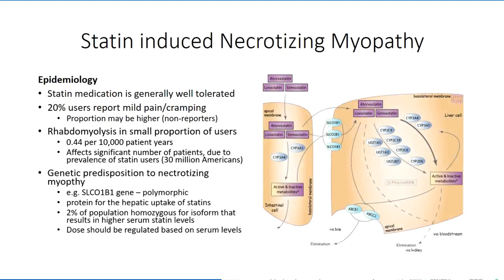Research now suggests that there may be a genetic predisposition to developing the more severe side effects from statin medications. For example, the SLCO1B1 gene codes for a transmembrane protein involved in the hepatic uptake of statins. About 2% of the population is homozygous for a less efficient isoform that results in higher serum levels than anticipated for a specific dose of the medication. For this reason, it is recommended that serum levels of statin be carefully monitored in the early phases of the prescription, and the dosage regulated on the basis of blood levels rather than on a person's body weight.